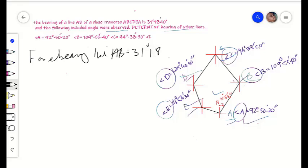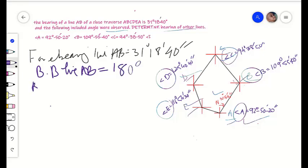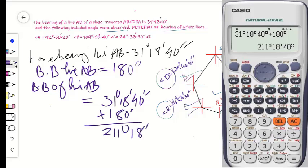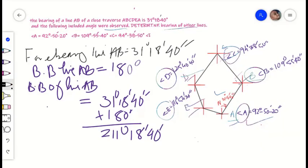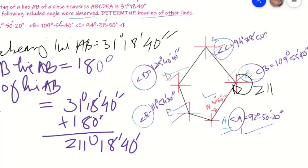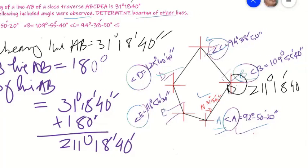To find out the back bearing of line AB, we will add 180 degrees to the forebearing of line AB. The back bearing of line AB is equal to 31 degrees 18 minutes and 40 seconds plus 180 degrees, which gives us 211 degrees 18 minutes and 40 seconds. This is the back bearing of line AB.